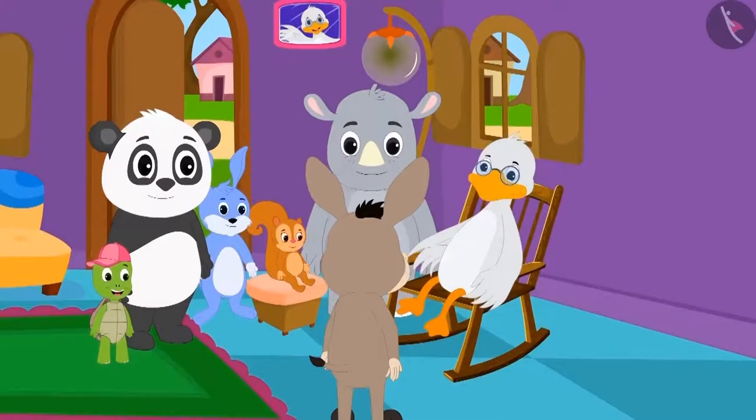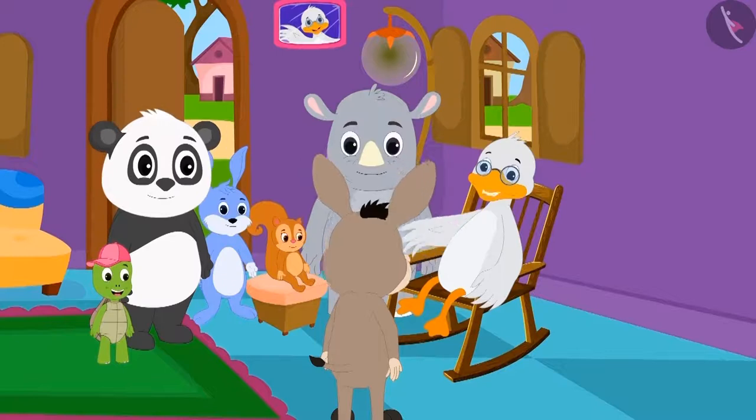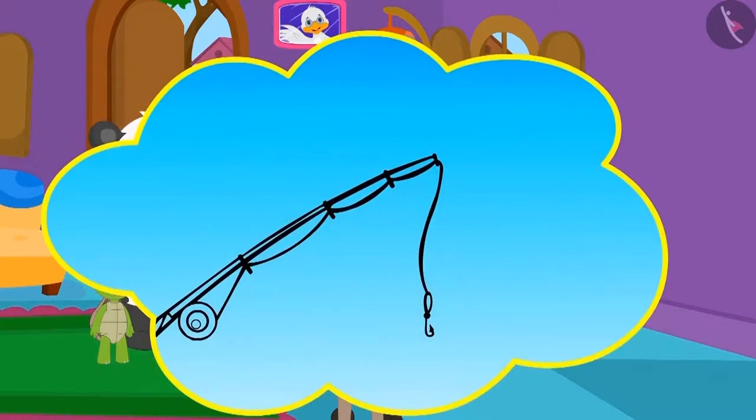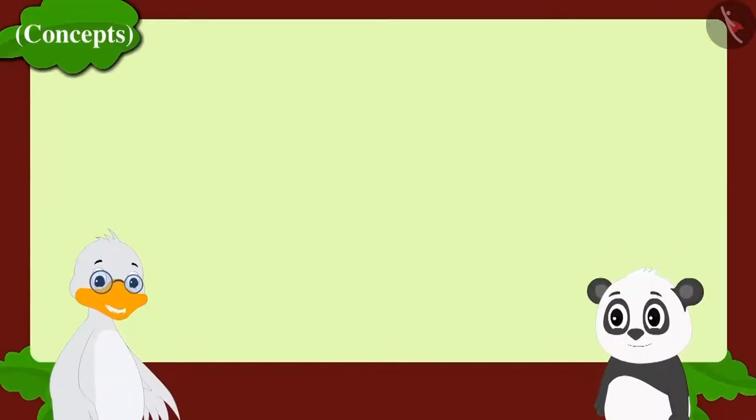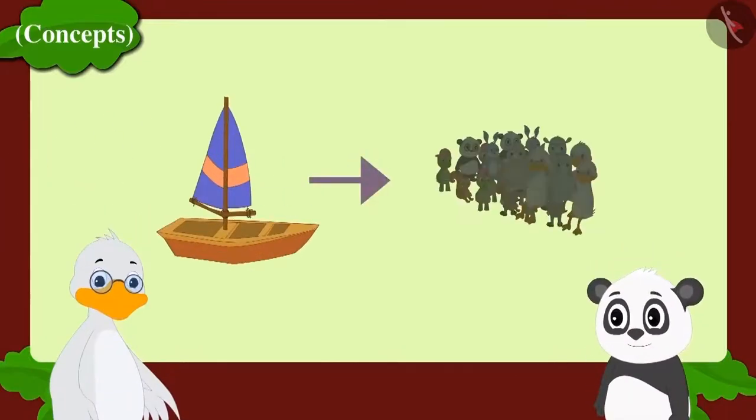One day, Badbole Chacha and some other people were going for fishing to the river together. They were 14 people in all, and they had two boats. Chacha asked Golu how many people could go in each boat.